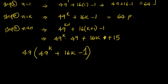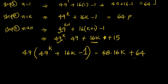The problem is when I multiply 49 into 49 to the power of k the first term is matching, but for the second term I have 49 into 16k, so I have to subtract 48 into 16k so that I will have just 16k. Then I have 15 here, but when I multiply by 49 I am making it minus 49, so I have to add plus 64 so that the value is not changed.